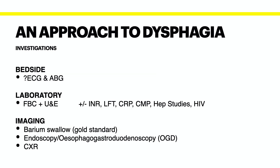How would we investigate a patient with dysphagia? At the bedside, we could do an ECG to rule out myocardial infarction, as well as an arterial blood gas to look for features of sepsis or electrolyte derangements due to vomiting. Typically these patients would be hypokalemic, hypochloremic, and have a metabolic alkalosis.